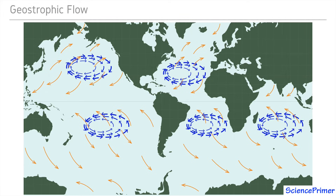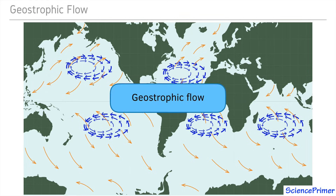This circulation pattern is an example of geostrophic flow, which is a type of movement that occurs when the forces acting on objects are so weak relative to the influence of the rotation of the Earth that Coriolis deflection is the factor that determines the direction of motion.